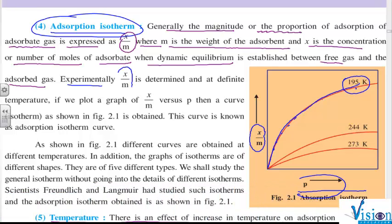Experimentally, x by m is determined at a definite temperature. If we plot a graph of x by m versus P, then a curve isotherm as shown can be obtained. This curve is known as adsorption isotherm curve. There are five adsorption isotherm curves. Out of five, we have to study two of them.